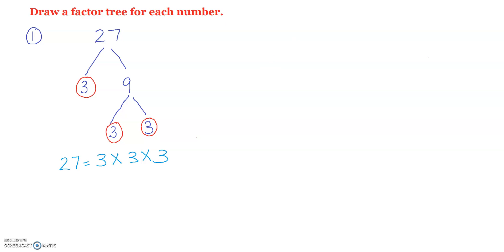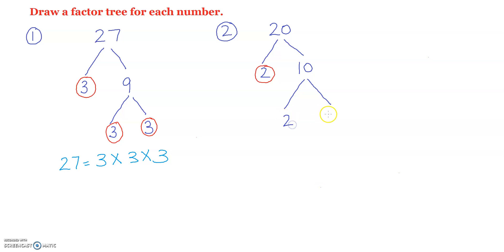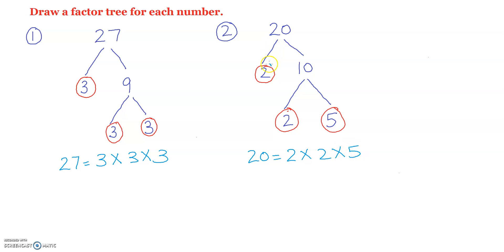The second example is 20. I know 20 comes in the 2 times table, so 2 times 10 is 20. Since 2 is a prime number, I leave it. Then I break 10 into 2 times 5. Both 2 and 5 are prime numbers, so that's the last step. The prime factors of 20 are 2 times 2 times 5. Or in exponential form, that is 2 to the power of 2 times 5.